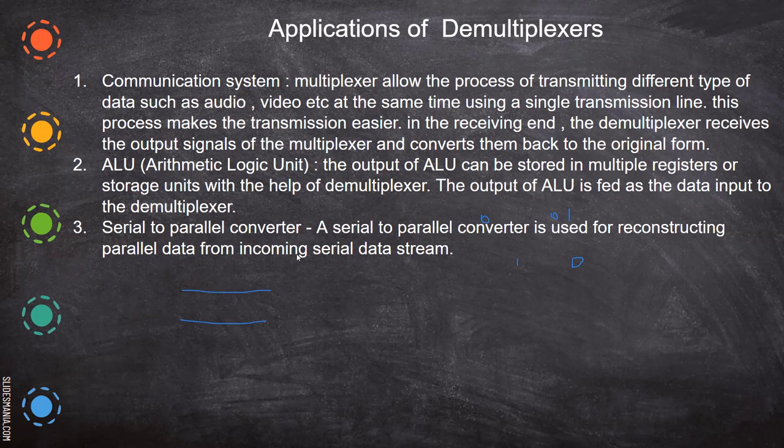Serial to parallel converter: A serial to parallel converter is used for reconstructing parallel data from incoming serial data. Serial data means in a single line all the data will come, and that will be distributed in the output of a demultiplexer, helping to separate the lines and give output to different circuits which are connected.